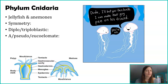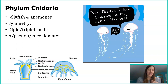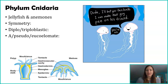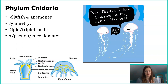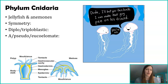Being diploblastic means they have two germ layers: the ectoderm and the endoderm, but they lack the mesoderm. Because they're diploblastic, we cannot even use the words acoelomate, pseudocoelomate, or eucoelomate. We can only use those terms when talking about triploblasts.